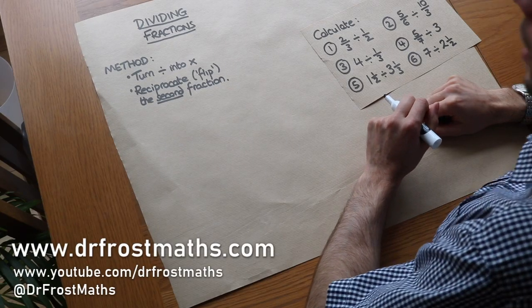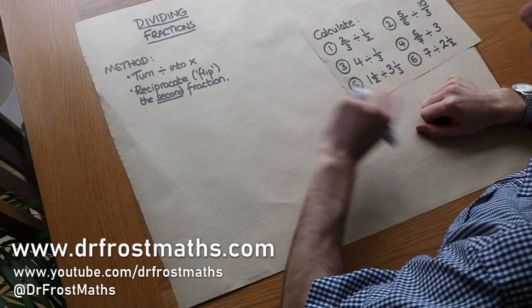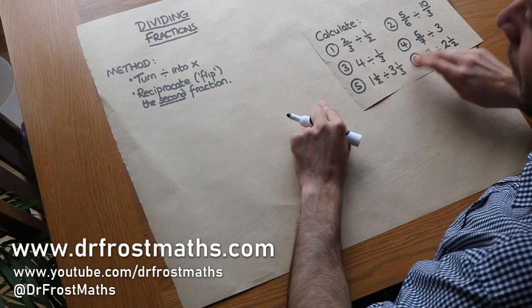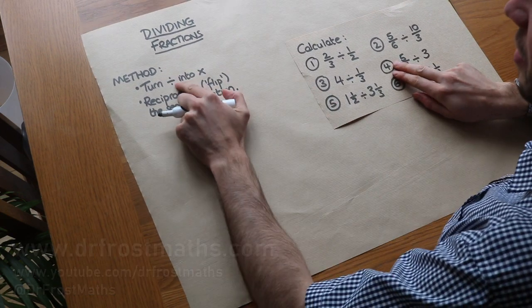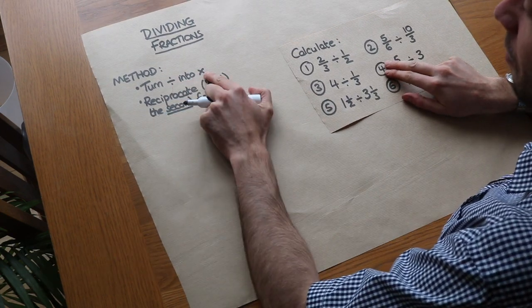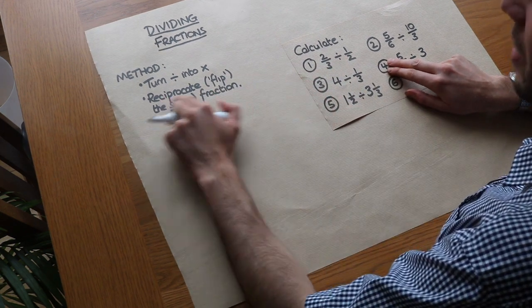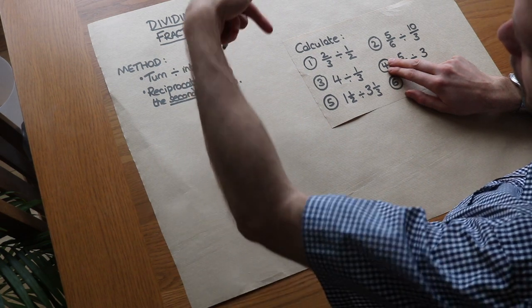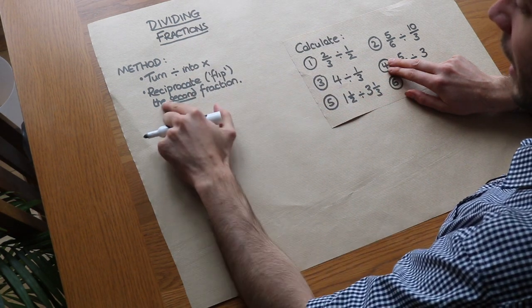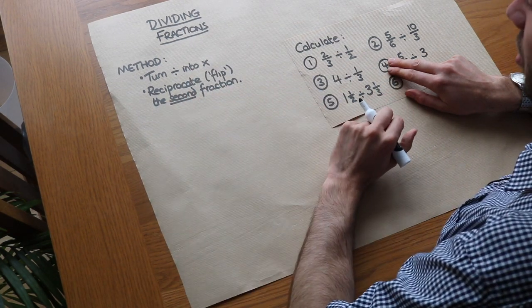Hello and welcome to this video on dividing fractions. I'm going to cut to the chase and tell you the method straight away. All you need to do when you divide fractions is turn the divide into times, so it's a multiplication of fractions instead. You need to reciprocate—flip the fraction upside down—the second fraction.